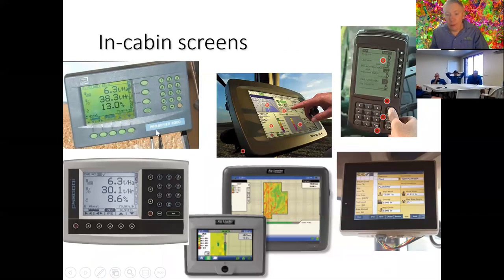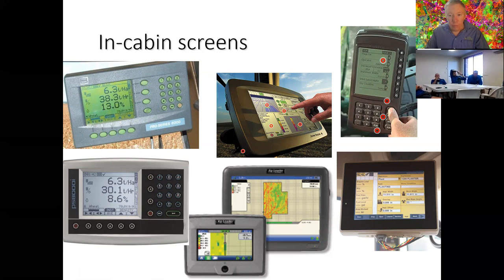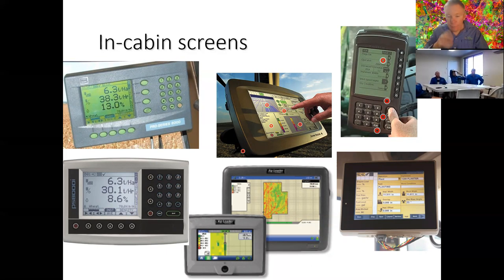Obviously there are screens in the cab, and now 99% of tractors and headers have a screen in them — that's normally where the monitoring is displayed. There are aftermarket options, but most modern machines are fully integrated: the yield monitor is fully integrated, the GPS is fully integrated, you unlock all the functions and features on that screen. Getting your data off is a fairly straightforward process — it's nothing to be afraid of.